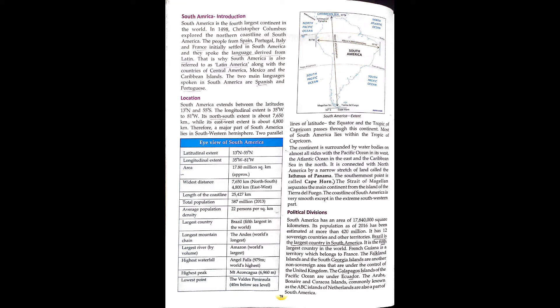Now, something about the location. South America extends between latitude 13 degrees north and 55 degrees south. The longitudinal extent is 35 degrees west to 81 degrees west. Its north-south extent is about 7,650 km while its east-west extent is about 4,800 km. Therefore, a major part of South America lies in the south-western hemisphere. Two lines of latitude — the Tropic of Capricorn — passes through this continent, and most of South America lies within the Tropic of Capricorn.